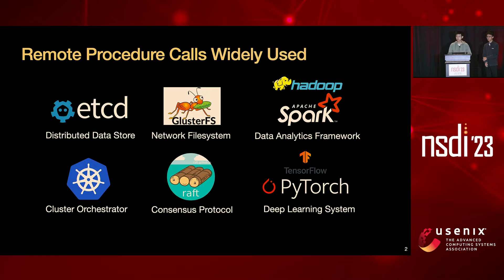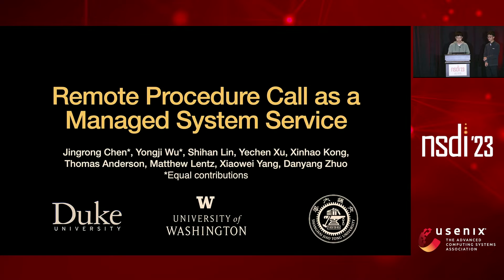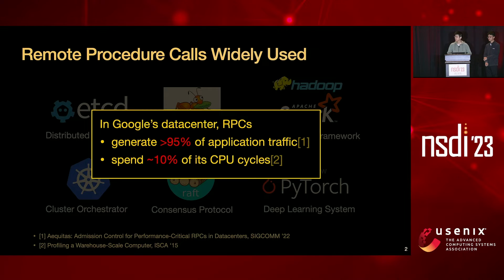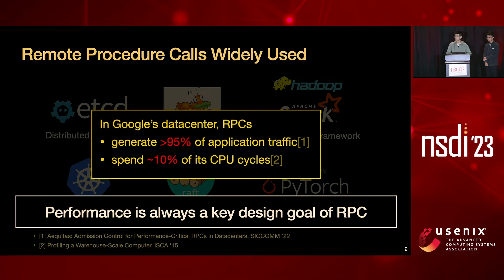Remote procedure call is a fundamental building block of distributed systems and microservices in modern data centers. RPC allows developers to build a wide range of networked applications using a simple and familiar programming model. According to Google's report, RPC generates more than 95% of the application traffic in its production data center and spends around 10% of data center CPU cycles just executing the gRPC library code. As a result, improving RPC performance has long been a major research topic.